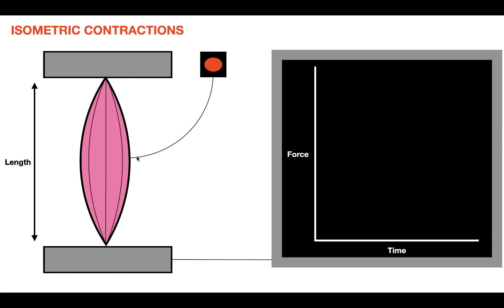When we put the stimulus into the muscle, the muscle contracts, and the two ends of the muscle are going to experience a force. The force generated by this contraction is going to try to bring the ends of the muscle towards the center of it. So whenever a muscle contracts, the two ends experience a force that drives them towards the center. But in an isometric contraction, the plates here prevent the ends of the muscle from moving inward, so the length is going to remain constant. If we were to display the force experienced by these plates per unit time, what we would see is something like this.